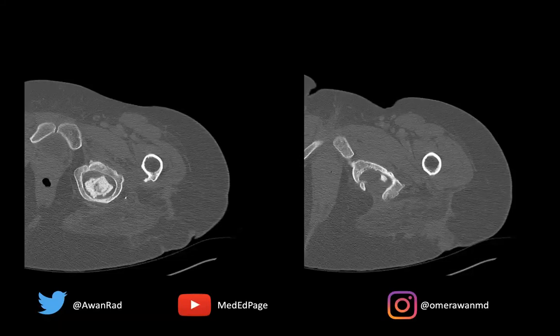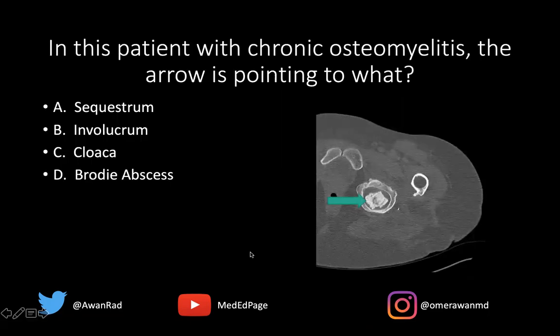Hello, and welcome to MSK Unknown Case Series, case number 58. We have a great case here. We have two axial images through the left hip showing some abnormalities. And the question that I have for you is: in this patient with chronic osteomyelitis, the green arrow is pointing to what?